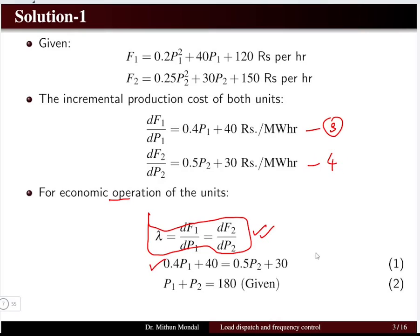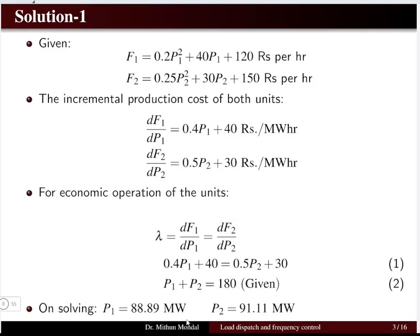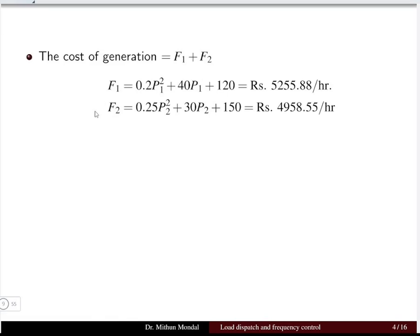Equating the incremental costs gives us the first equation to solve. The second equation is the total power demand of 180 MW. Solving these two equations in two variables, P1 and P2, we get the power in each plant as 88.89 MW and 91.11 MW.